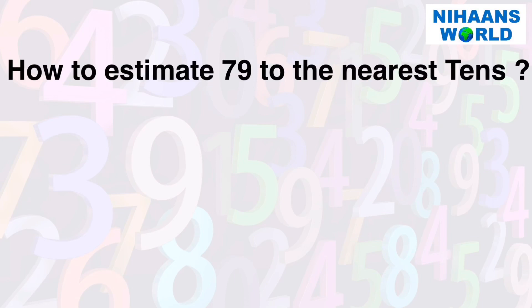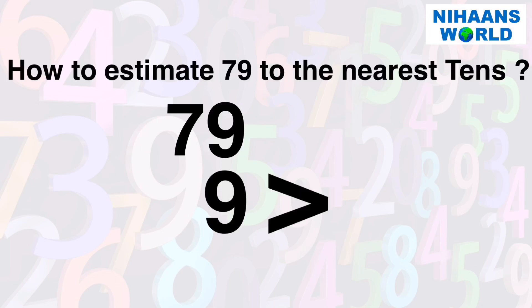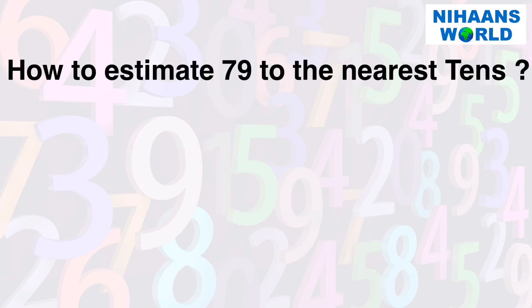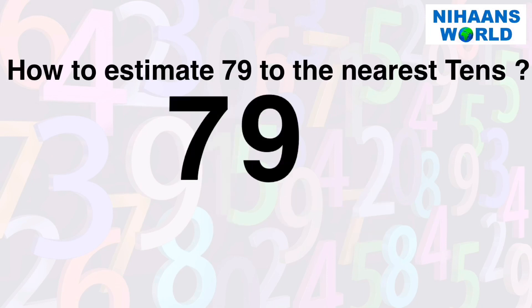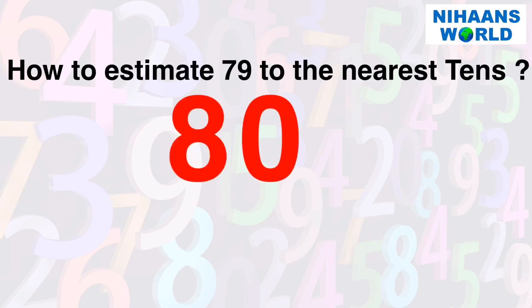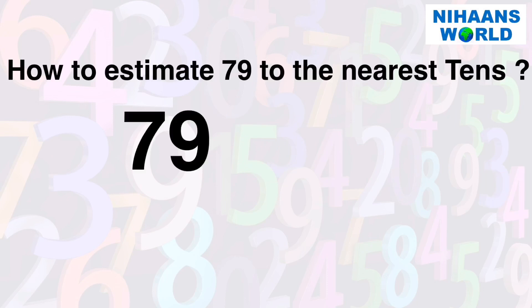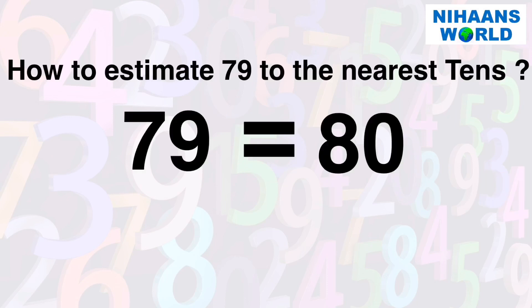How to estimate 79 to the nearest tens? The unit digit in 79 is 9, which is greater than 5. So we replace the ones digit by 0 and increase the tens digit by 1 to get the rounded off number. Hence, 79 rounded off is equal to 80.